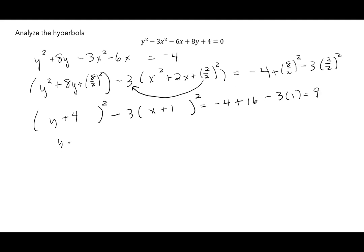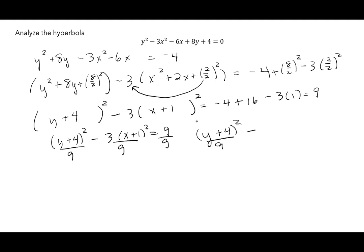So I have (y+4)² - 3(x+1)² = 9. Dividing everything by 9 gives (y+4)²/9 - (x+1)²/3 = 1, since the 3 cancels with the 9 to leave a 3 in the denominator.